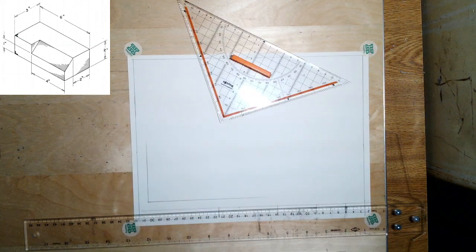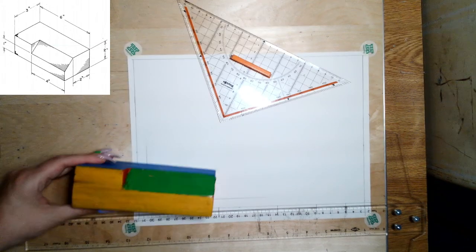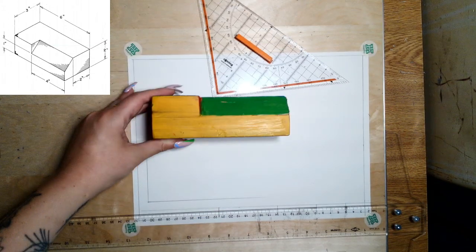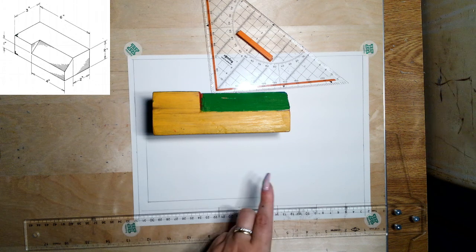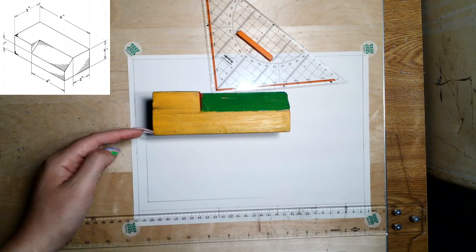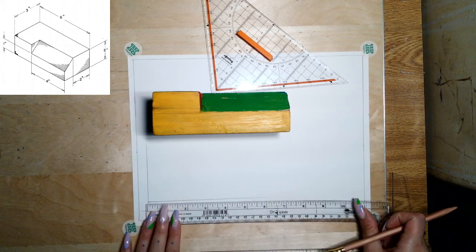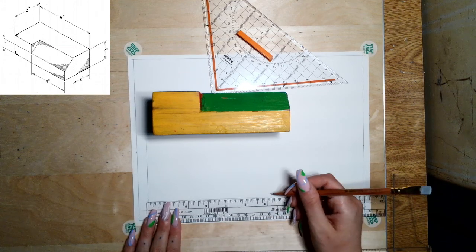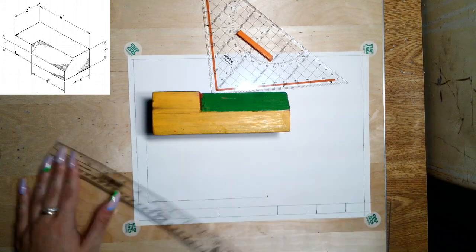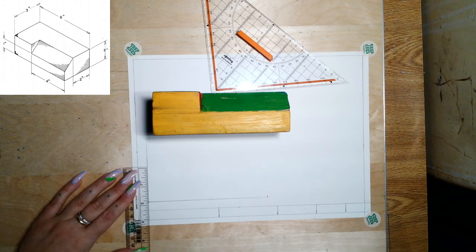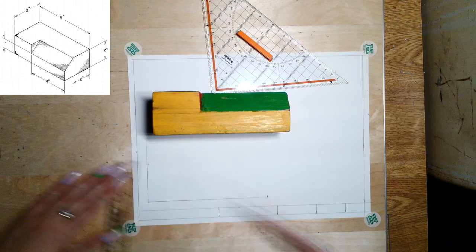And then I'll measure out the front of the object. So the overall length on my front is 6 and my overall height is 2. So I'm just going to make some little marks at 6 inches.